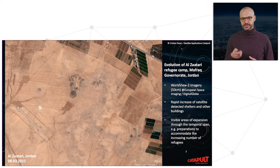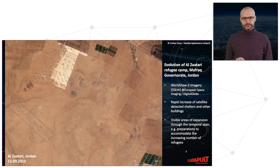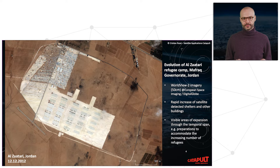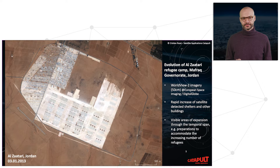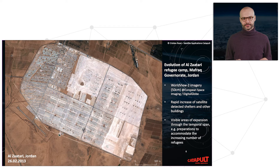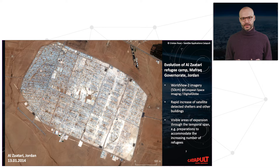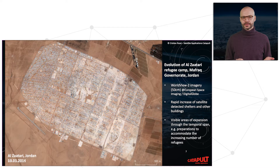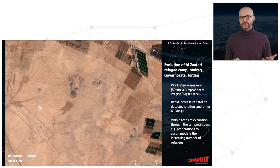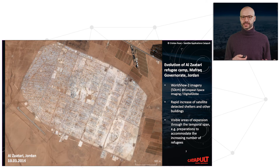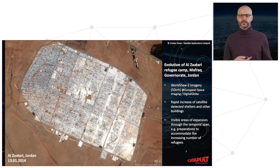This is actually a series of images. We see in 2011 how the land was, then 2012, 2013, till the last one. What we have seen here is how the refugee camp evolved through time, so we can see a visible area of expansion.